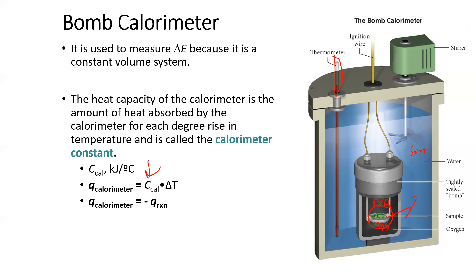Once we figure out the heat that the calorimeter absorbed, we know that it's opposite and equal to the heat of the reaction — so we just put a negative sign. They're equal, just opposite directions, and from the calorimeter measurement we can figure out the heat of the reaction. It's an indirect process. And again, because work was zero due to the constant volume, the delta E of the reaction is essentially equal to the heat of the reaction that we observe.